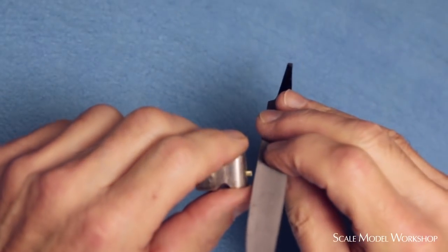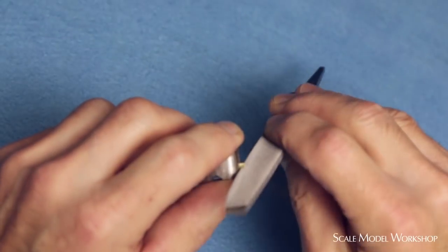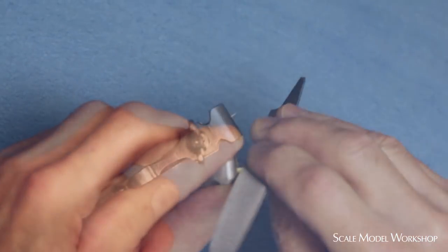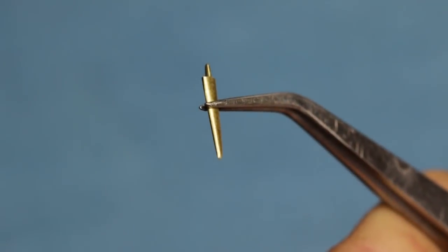Clamp the antenna in a hand vise. The safe edge of the file goes against the jaws of the vise. File from both sides until the pin has a square cross section.